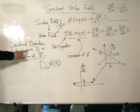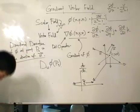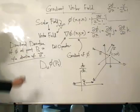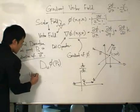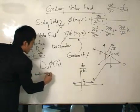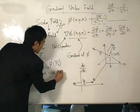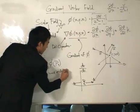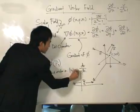The rate of change of phi at point naught in the direction of u. And I forgot to add that u needs to be a unit vector, i.e. magnitude of u equals to one.